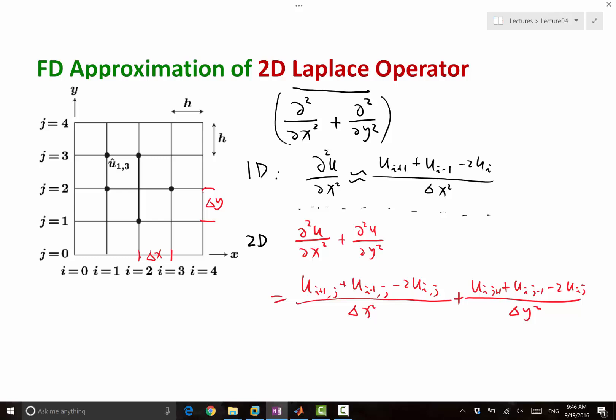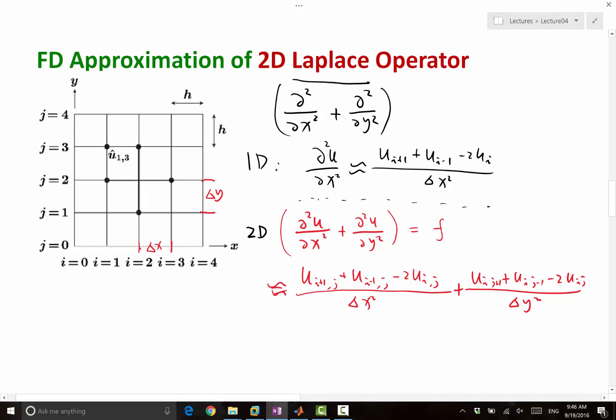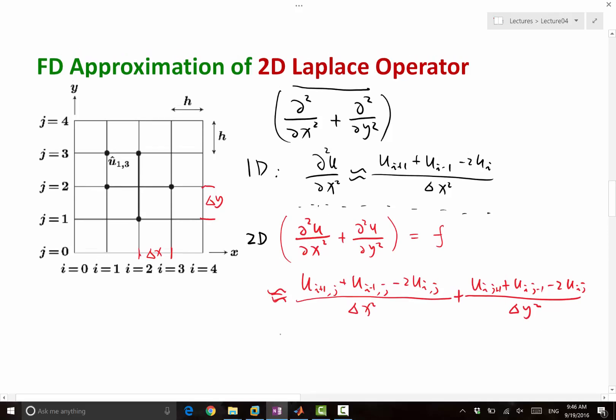So now we have an approximation to this operator. So here, if I have the Poisson's equation, which means this is equal to f, that means this finite difference operator can be equalized to f of ij.